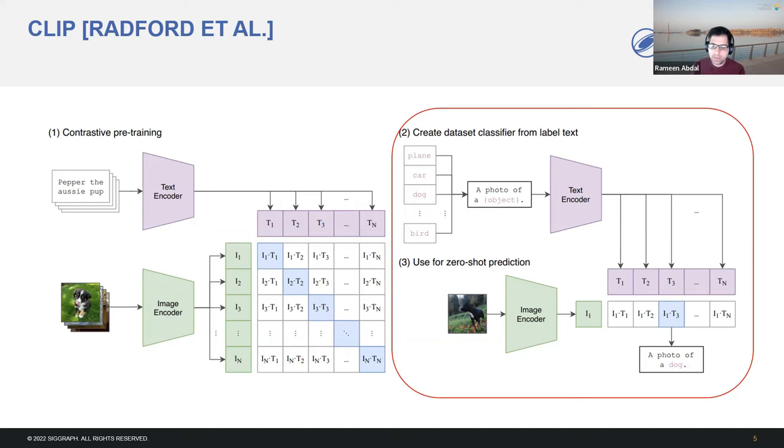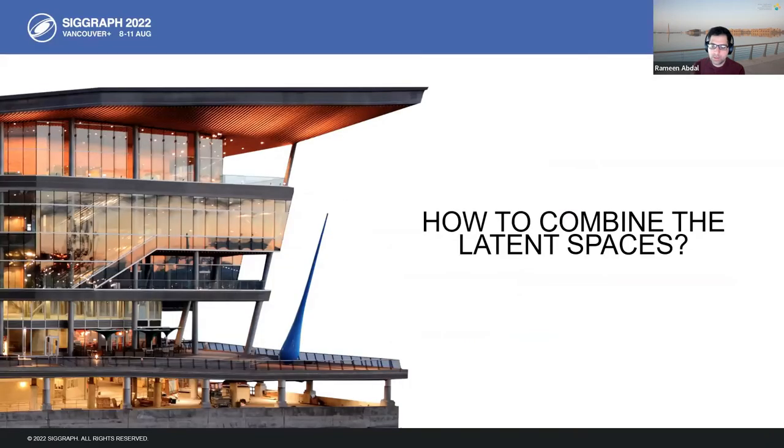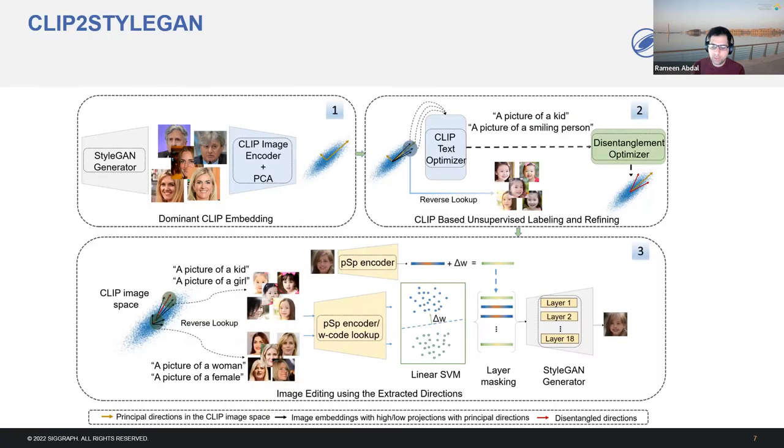This architecture opens avenues of finding important directions and modes given a set of original or GAN-generated datasets. An associated challenge here is to label an arbitrary set of images without the given label priors. The question we focus on is how do we combine the GAN and the CLIP latent spaces to find important directions that can lead to some interesting edits in the GAN latent space.